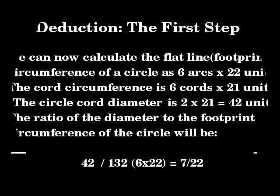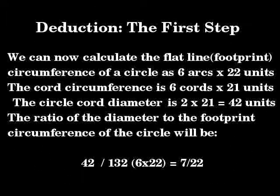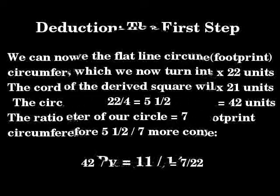Now that we have k equal to 21 over 22, we can proceed to establish Pi by means of deduction. The first step: we can now calculate the flat line circumference of a circle as 6 arcs times 22 units. The chord circumference is 6 chords times 21 units. The circle chord diameter is 2 times 21, which is 42 units. The ratio of the diameter to the footprint circumference of the circle will therefore be 42 over 132, which is 7 over 22.